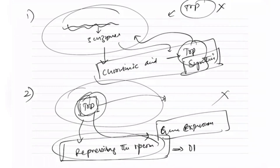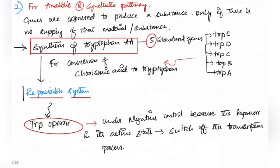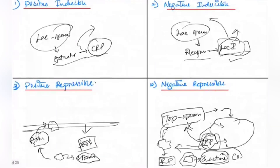In exams, you may be asked: is lactose an inducible or repressible system? Is tryptophan inducible or repressible? Is it positively or negatively regulated? These are very common questions in regulation of gene action topics. You need to understand why each system is repressible or inducible in order to remember them.